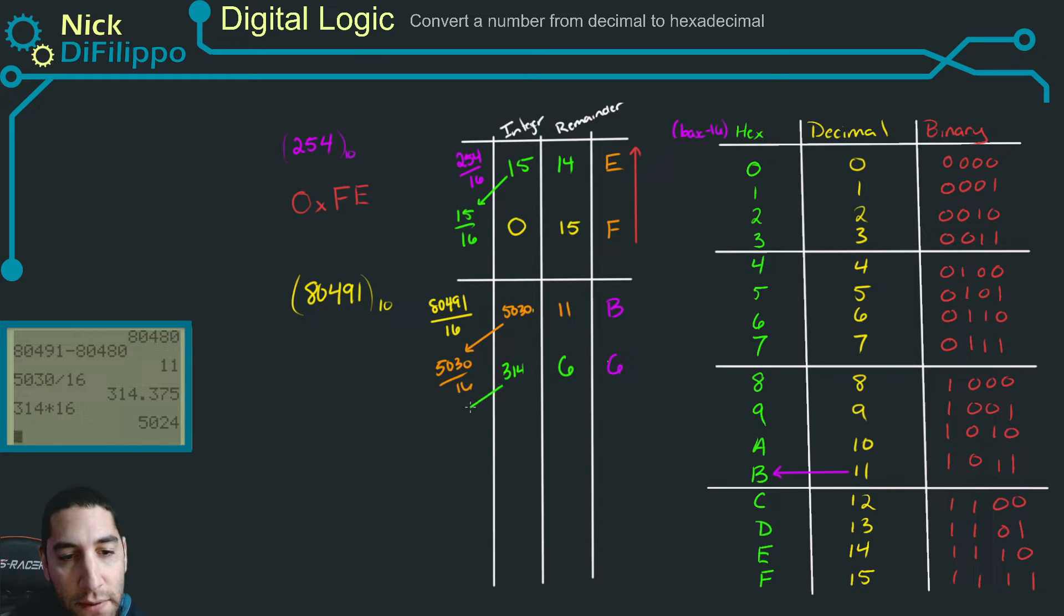Repeat the procedure. The 314 gets divided by 16. We get that this is equal to 19.